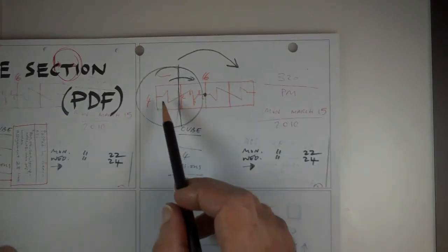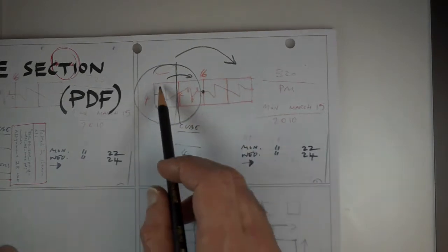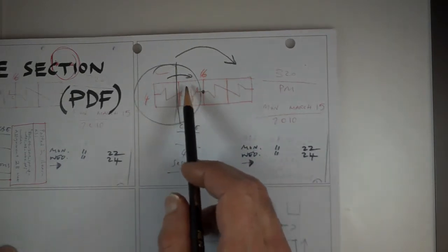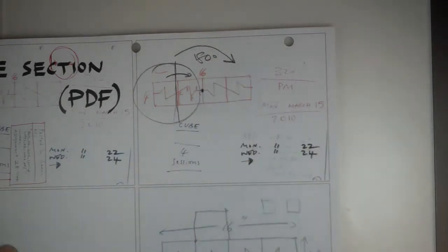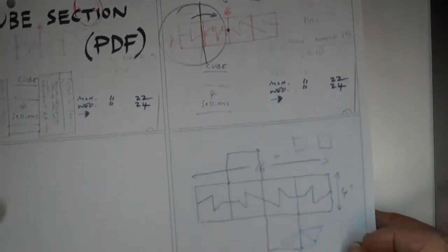So the first one is the process by which you get the outside of the cube by taking your section, mirroring it, and then taking the whole thing and flipping it 180 degrees. Okay, so that's the first one.